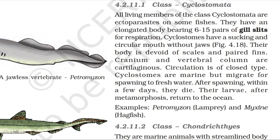Topic 4.2.11.1: Class Cyclostomata. All living members of class Cyclostomata are ectoparasites on some fishes. They have an elongated body bearing 6–15 pairs of gill slits for respiration. Cyclostomes have a sucking and circular mouth without jaws. Their body is devoid of scales and paired fins. Cranium and vertebral column are cartilaginous. Circulation is of closed type. Cyclostomes are marine but migrate for spawning to fresh water. After spawning, within a few days they die. Their larvae after metamorphosis return to the ocean. Examples: Petromyzon (lamprey) and Myxine (hagfish).